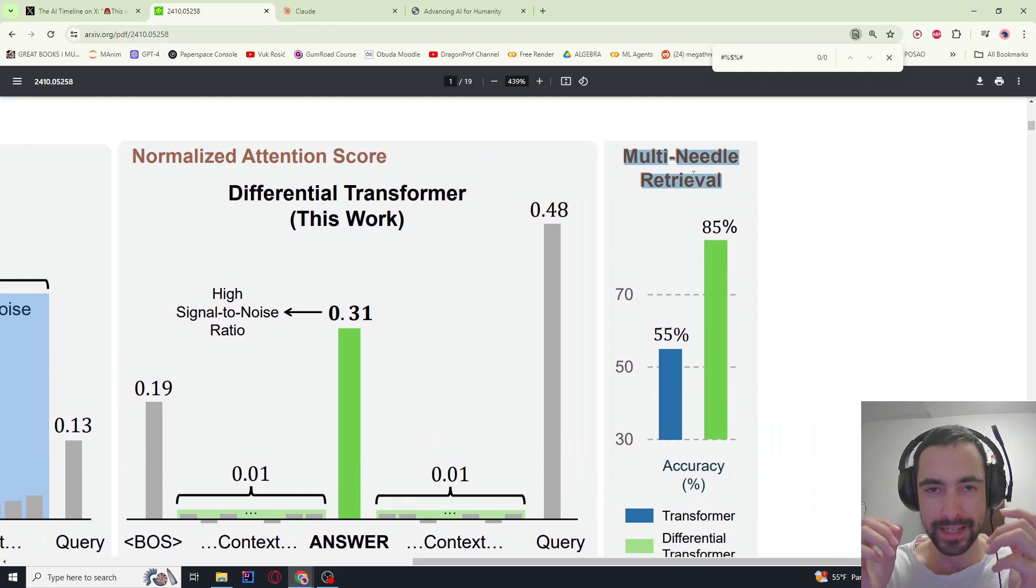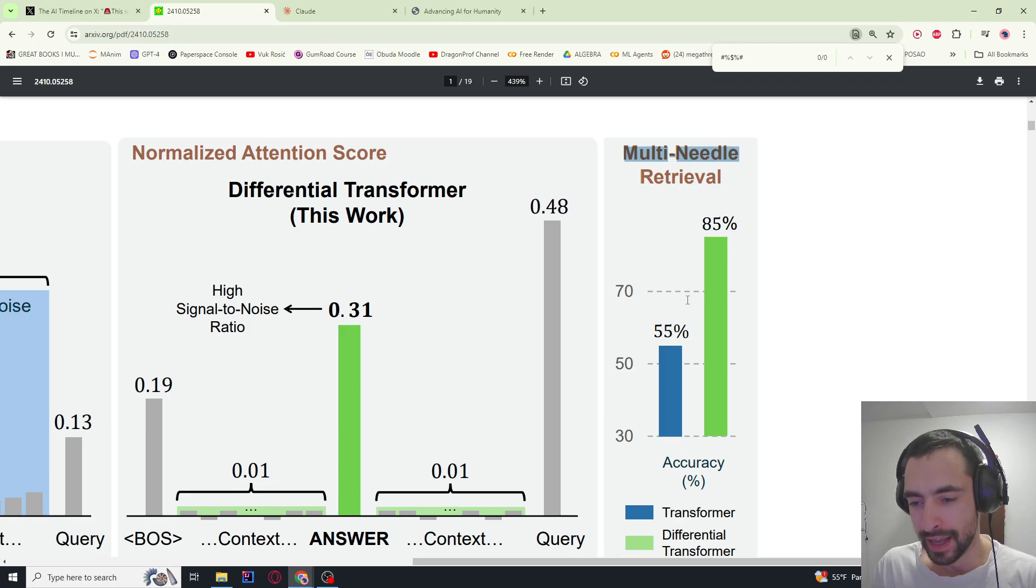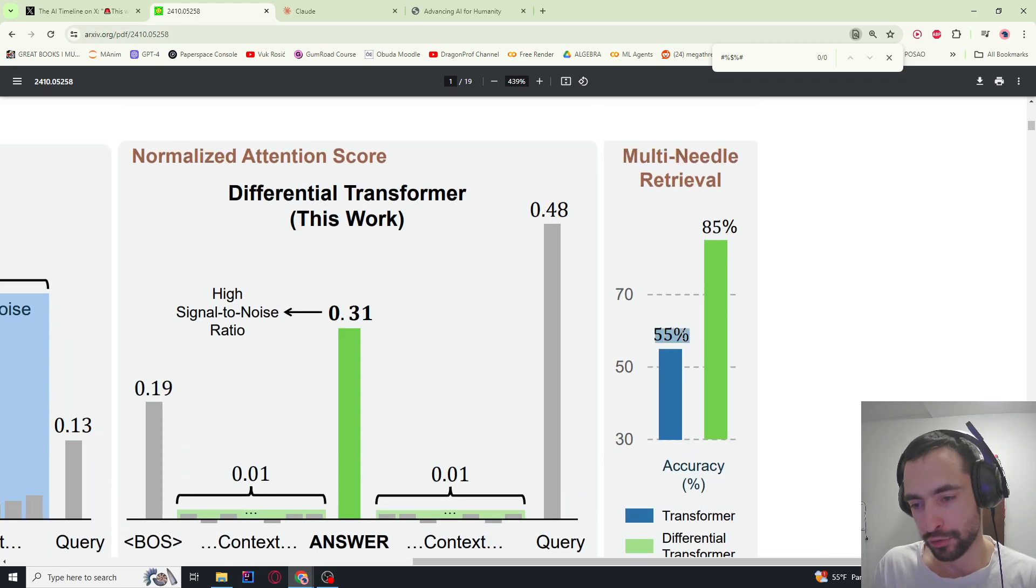Needle in a haystack—you have a lot of text, like whole novels, and somewhere there's one random sentence like 'I have three apples,' and they ask 'how many apples do you have.' Multi-needle means multiple of these sentences throughout the haystack. The classic transformer retrieves it 55% of the time and their method retrieves the relevant answer 85% of the time.